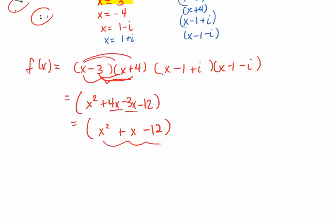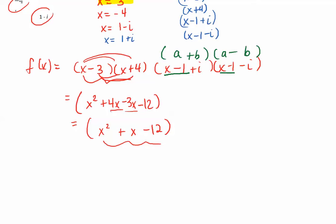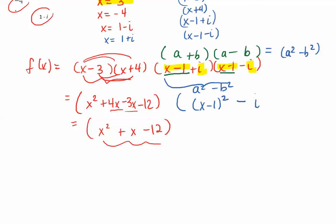Now I come to the two complex factors. I can see a pattern: x minus 1 plus i times x minus 1 minus i. This always follows the pattern of a difference of two squares — a plus b times a minus b — where a is the group x minus 1 and b is i. The product of a difference of two squares is a squared minus b squared, so the shortcut gives us x minus 1 quantity squared minus i squared.